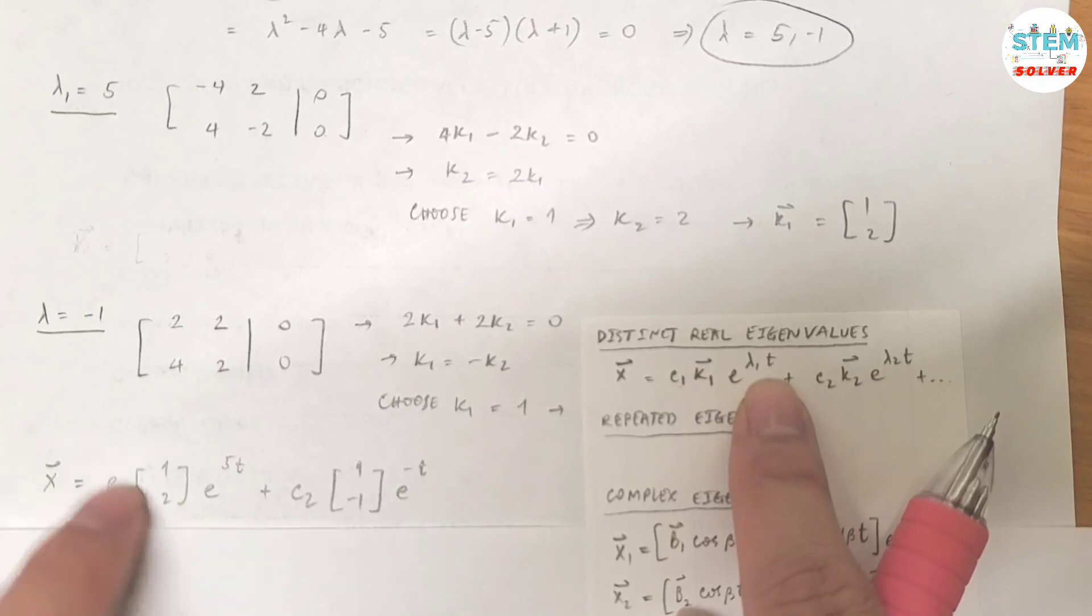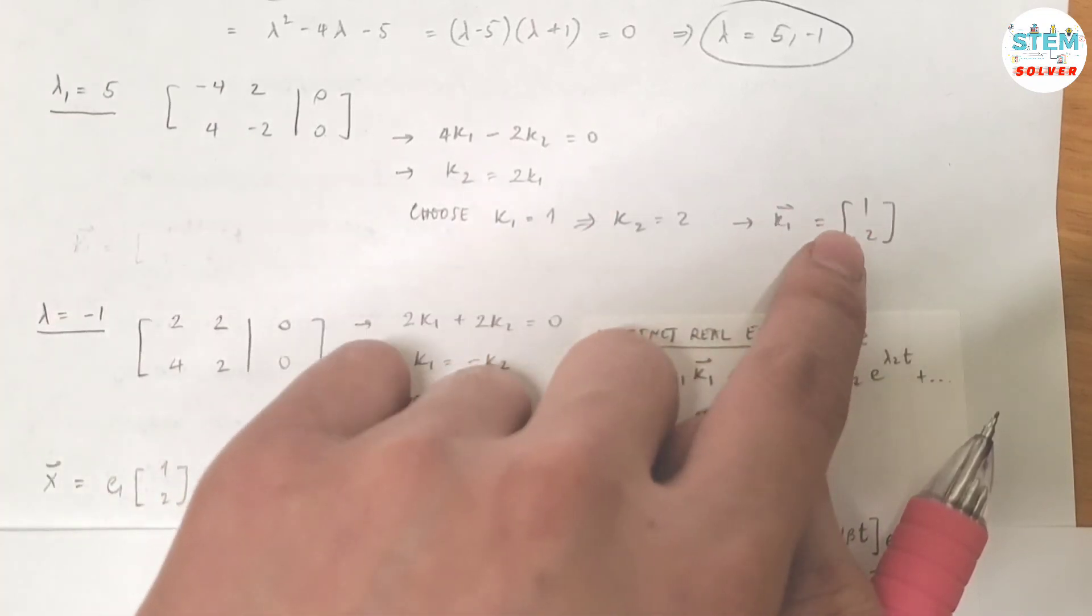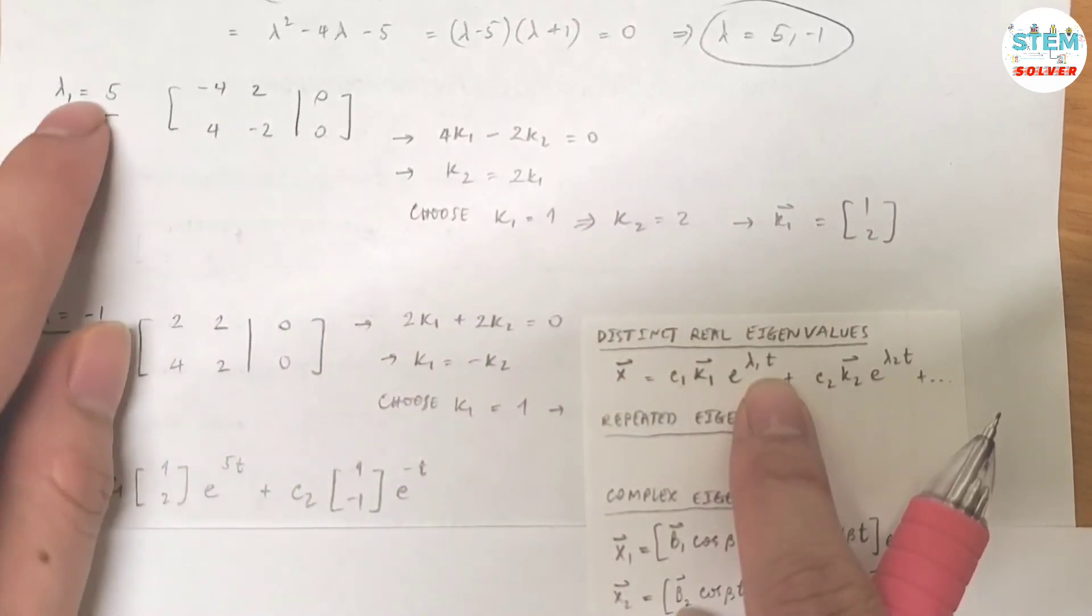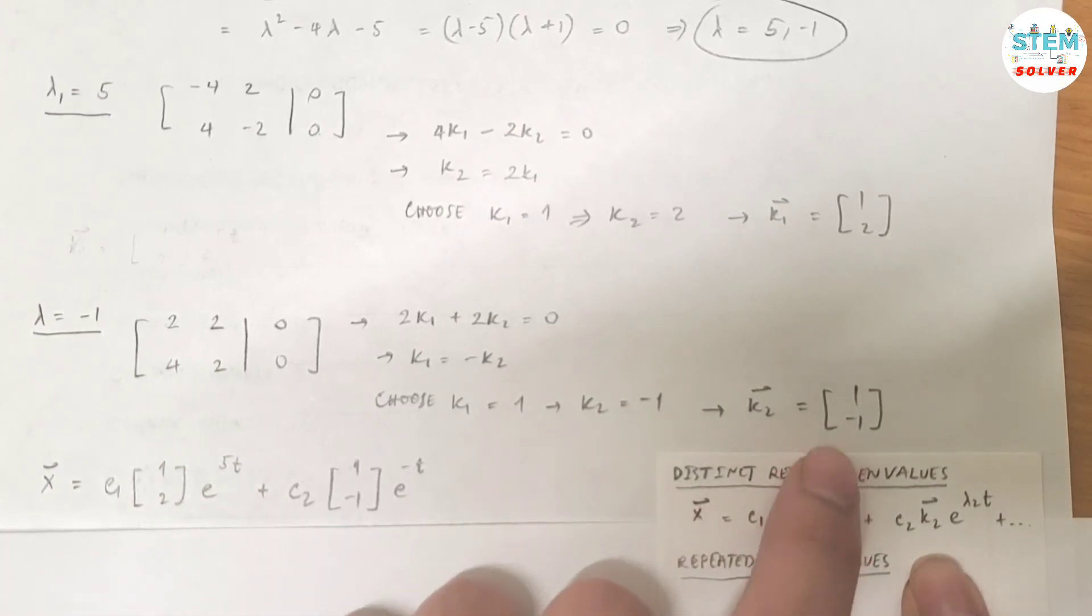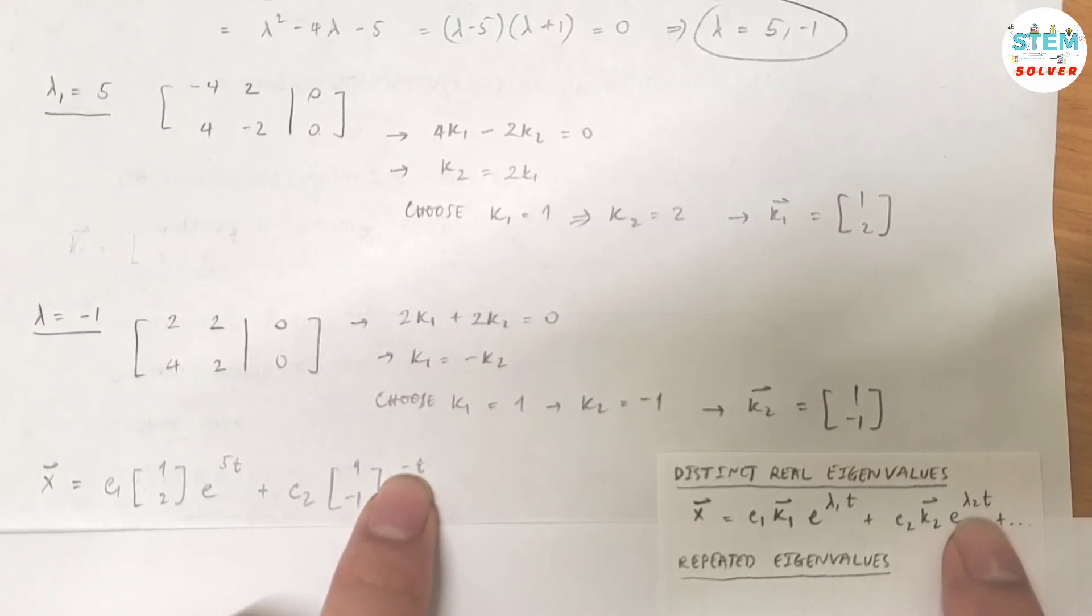e^(lambda_1 t), lambda 1 is 5, with respect to this k, so you have e^(5t) plus C2 times k2, k2 is this one [1, -1], e^(-t) because lambda 2 is negative 1.